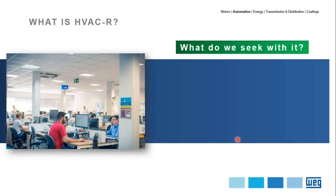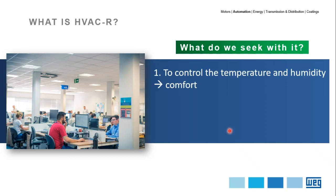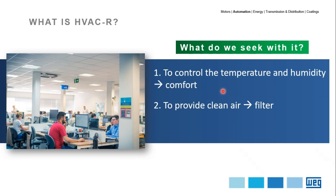What do we seek with HVAC systems? The first goal is comfort — you want to control temperature and humidity where you are. The second is to provide clean air: you filter the air from outside before exchanging heat with it to make it cooler or hotter, so you can breathe clean air. The third point is to circulate the air, bringing fresh air from outside, since in breathing we exhale CO2 which is not good for us. You have to renew the air in a premise.